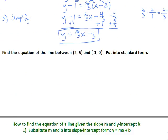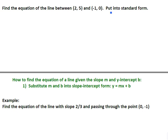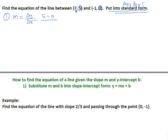In the next example, we want to put our final equation into standard form — that pretty form ax plus by equals c. We still proceed the same way. Finding slope m: change in y over change in x. Starting with 5 minus 0 in the numerator, and 2 minus (−1) in the denominator. That gives 5 over 3, so slope m is 5/3.